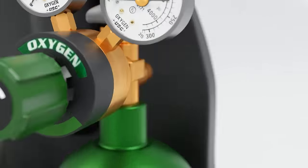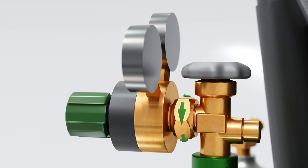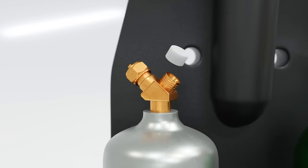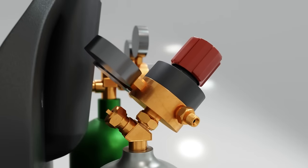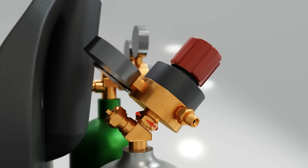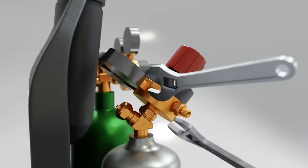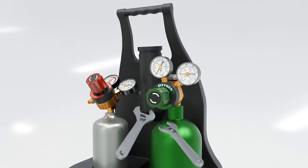First, connect your oxygen regulator to the oxygen tank clockwise, or righty-tighty. The same is true for the regulator on your acetylene tank. Use a backing wrench and make sure they're snug, no need to over-tighten.